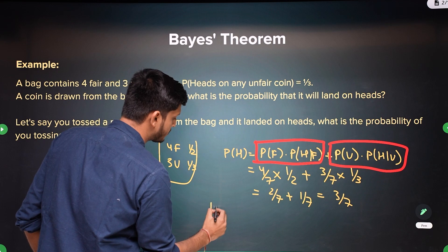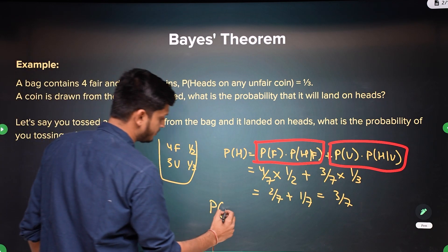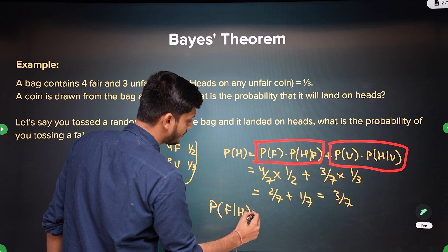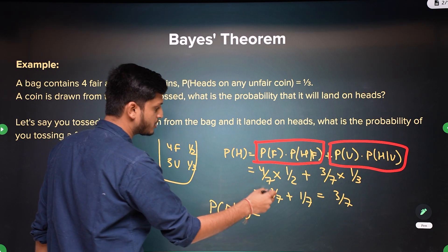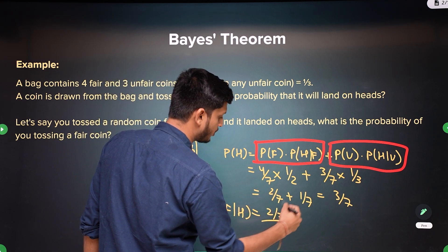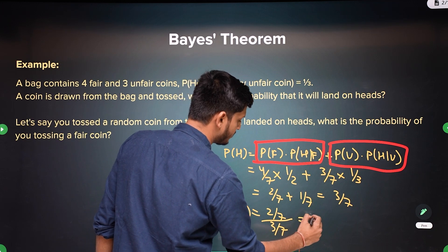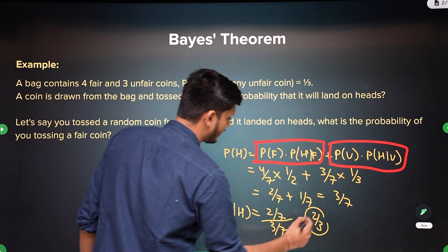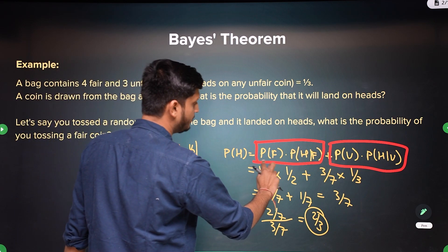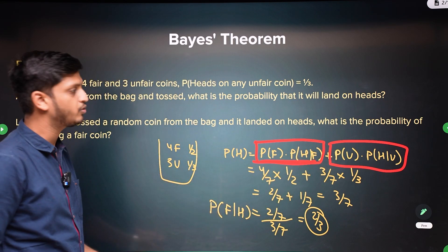Now what we need to calculate is the probability that you got a fair coin, given that you landed on heads. It is just the contribution of heads from the fair coin upon the overall total probability, which is 3 by 7. So it is 2 by 3. You can apply the formula — this term upon the probability of heads — and you will get 2 by 3.